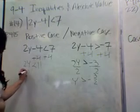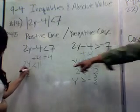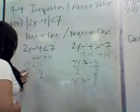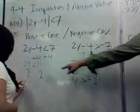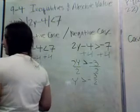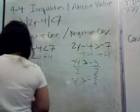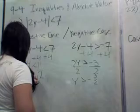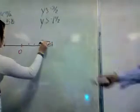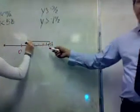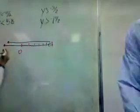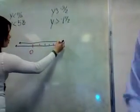On the positive case side, we divide by 2 and get y is less than 11 over 2. So on the number line, you've got an open circle going to the left because y is less than 5 and a half.